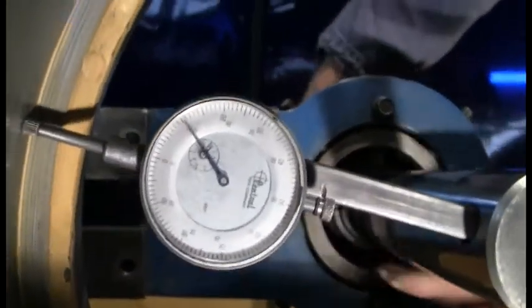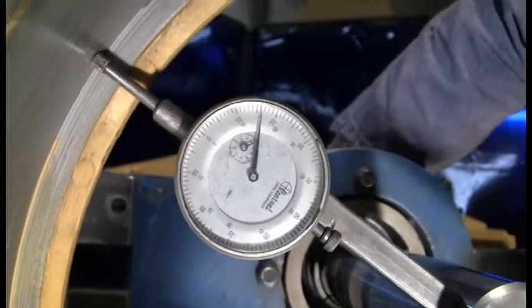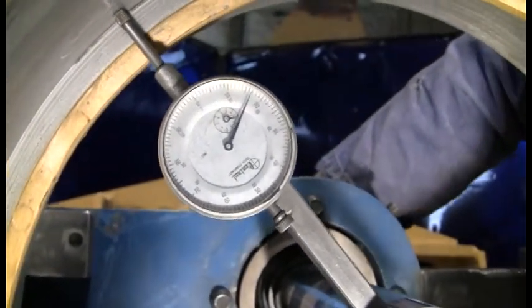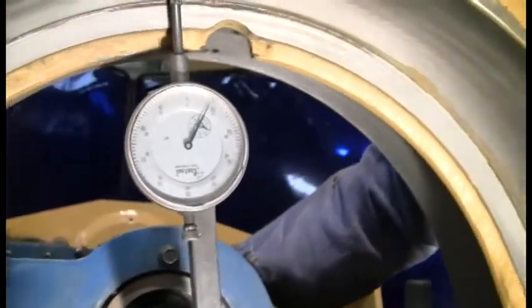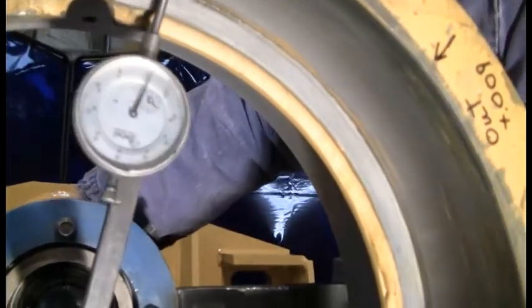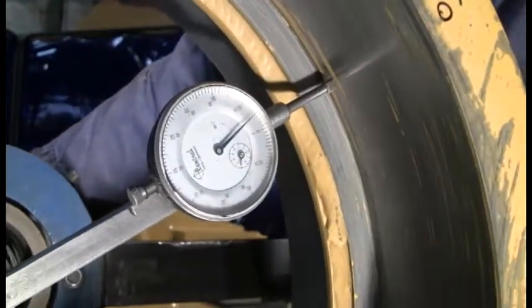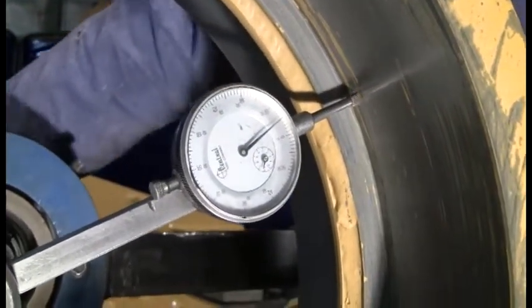We'll run it around one more time. Sixteen thousandths, a little over sixteen thousandths there. Coming back up, as you can see, we're zero again there, and then we're back out by five thousandths, six thousandths there.